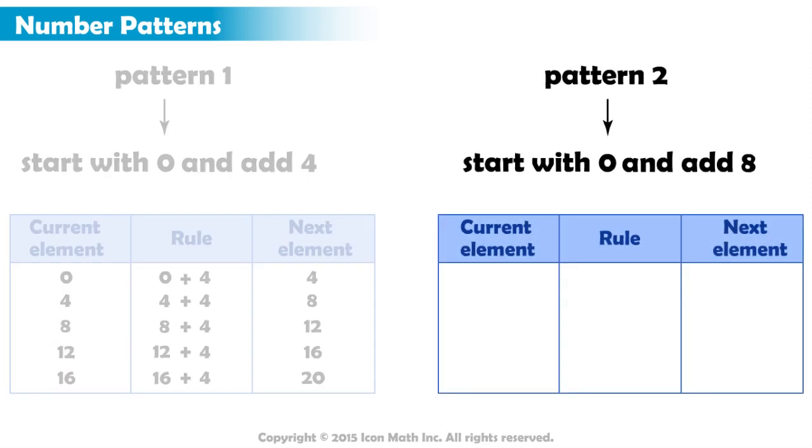Let's move to the second pattern. The rule here is add eight. Just like before, we start with zero and add eight. Zero plus eight is eight, which goes into the results column. And eight becomes the current element. Eight plus eight is sixteen.